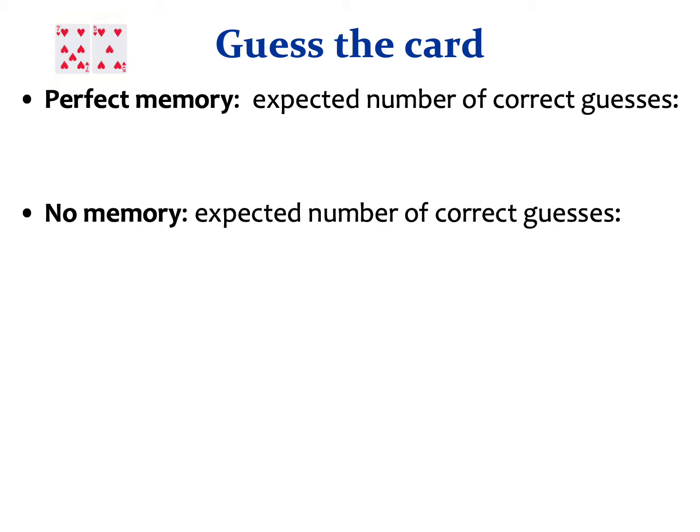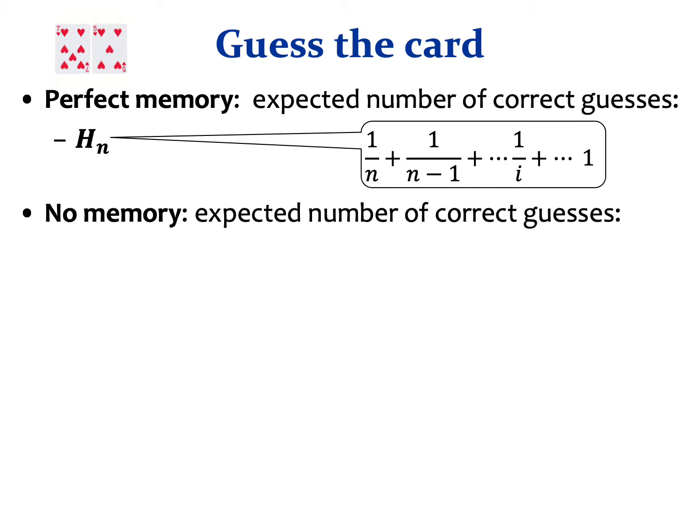A guesser with perfect memory can keep track of all cards drawn so far and all cards that still reside in the deck, and simply guess a card that still resides in the deck. On the first turn, that guesser would be correct with probability 1 over N, on the second with probability 1 over N-1, when I cards are left with probability 1 over I, and when a single card is left, the guesser is correct with probability 1. By linearity of expectation, this results in the harmonic sum, which is roughly ln N.